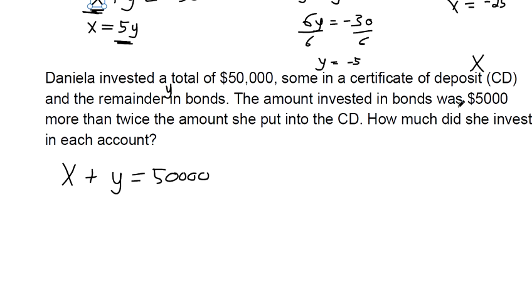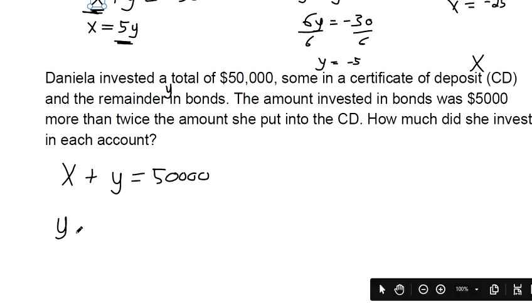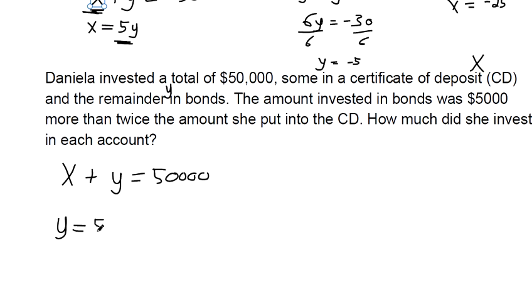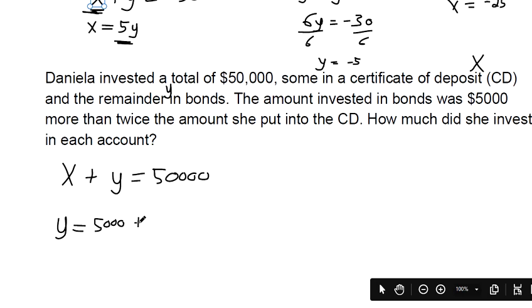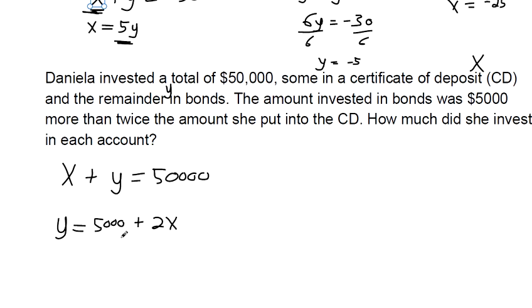And then the amount invested in bonds, that's our y. So the amount invested in bonds was $5,000 more than twice the amount they put in the CD, which was x. $5,000 more than twice they put in the CD. So there we go.